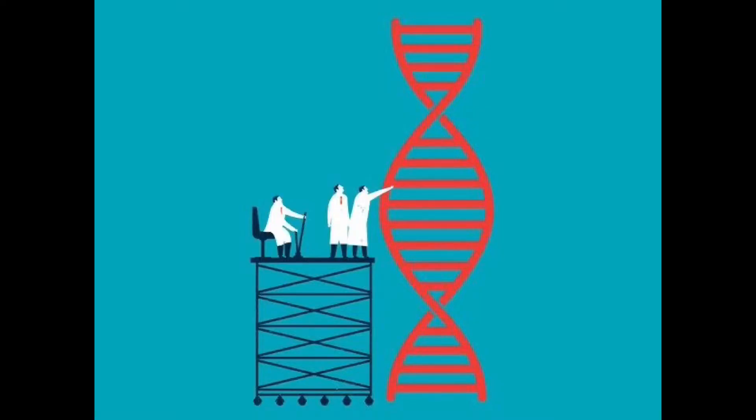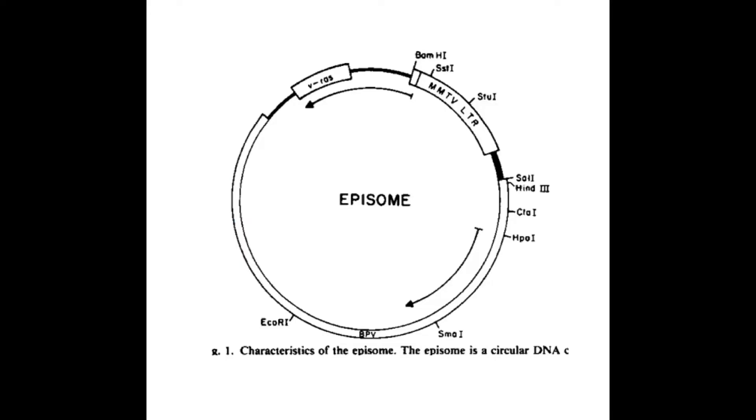An episome is a special type of plasmid which remains part of the eukaryotic genome without integration. Episomes manage this by replicating together with the rest of the genome and subsequently associating with metaphase chromosomes during mitosis.